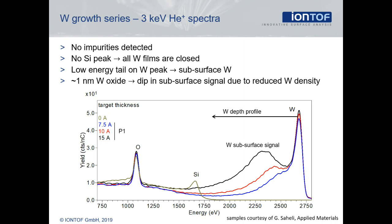Using 3 kV helium scattering, only the expected elements are detected — no contaminant is found. All tungsten films are closed, and a silicon peak is only detected on the sample prior to deposition. The tungsten peak is accompanied by a low-energy tail — the tungsten in-depth signal. Due to the oxidation of the tungsten close to the surface, the intensity of the tungsten in-depth signal is reduced, forming the dip directly to the left of the tungsten surface peak. In the first approximately 1 nm, the tungsten density is reduced due to the presence of oxygen.